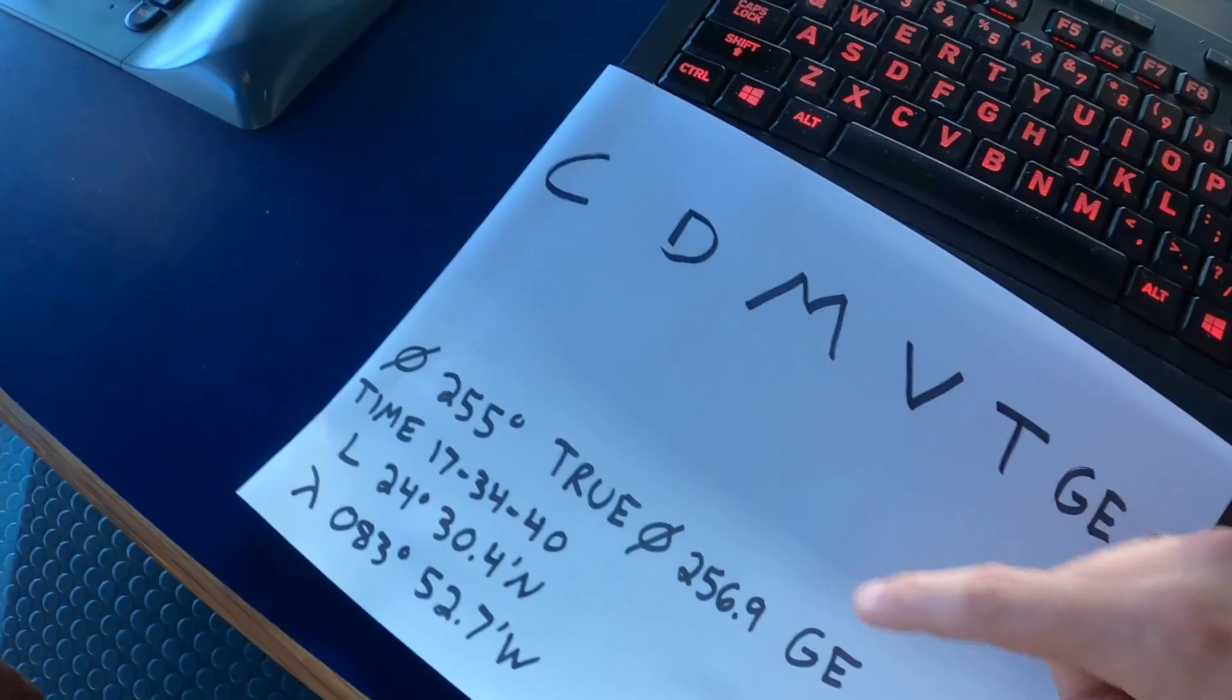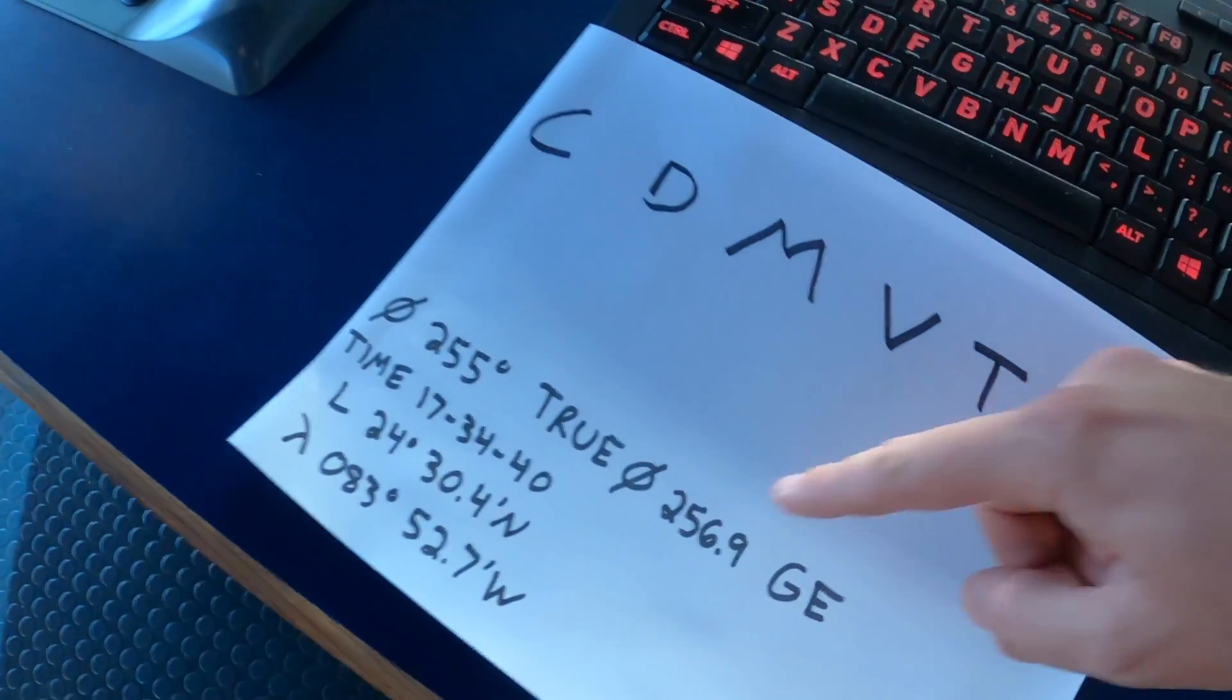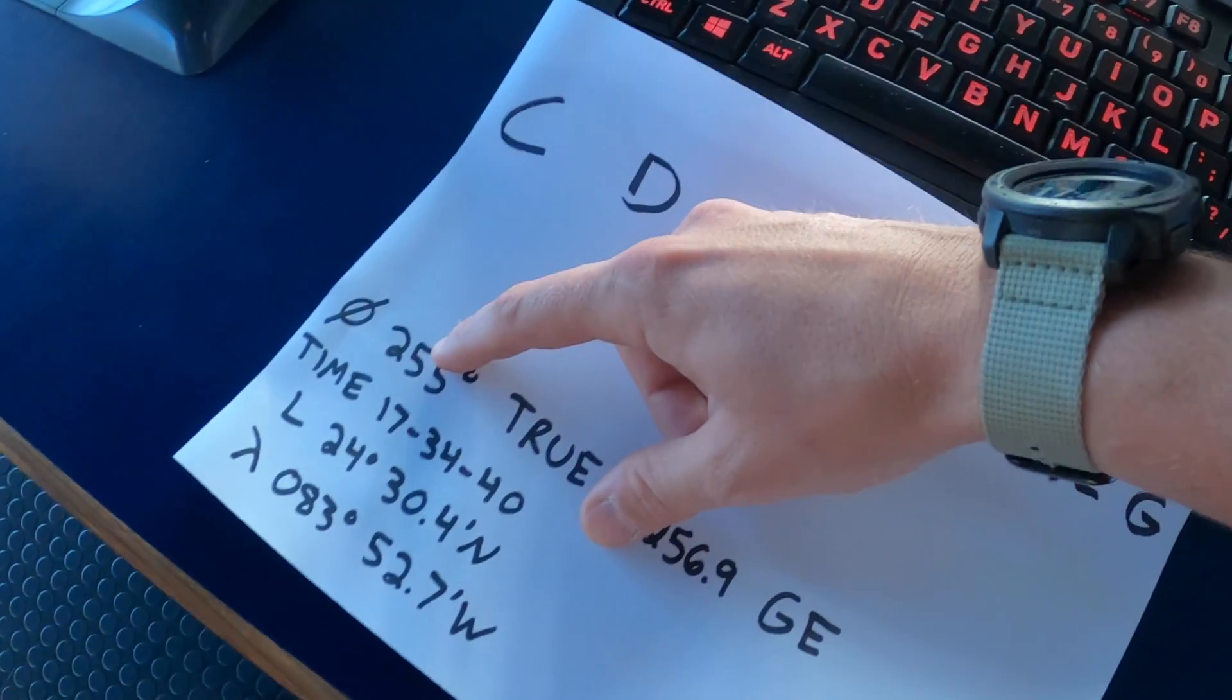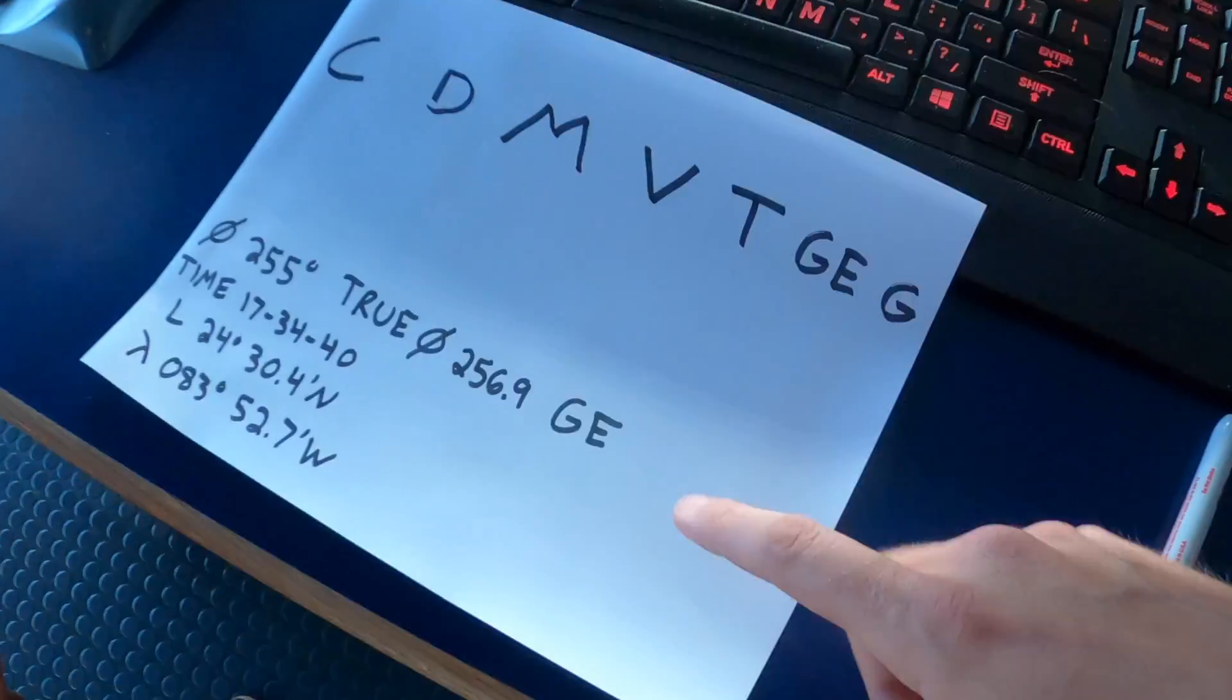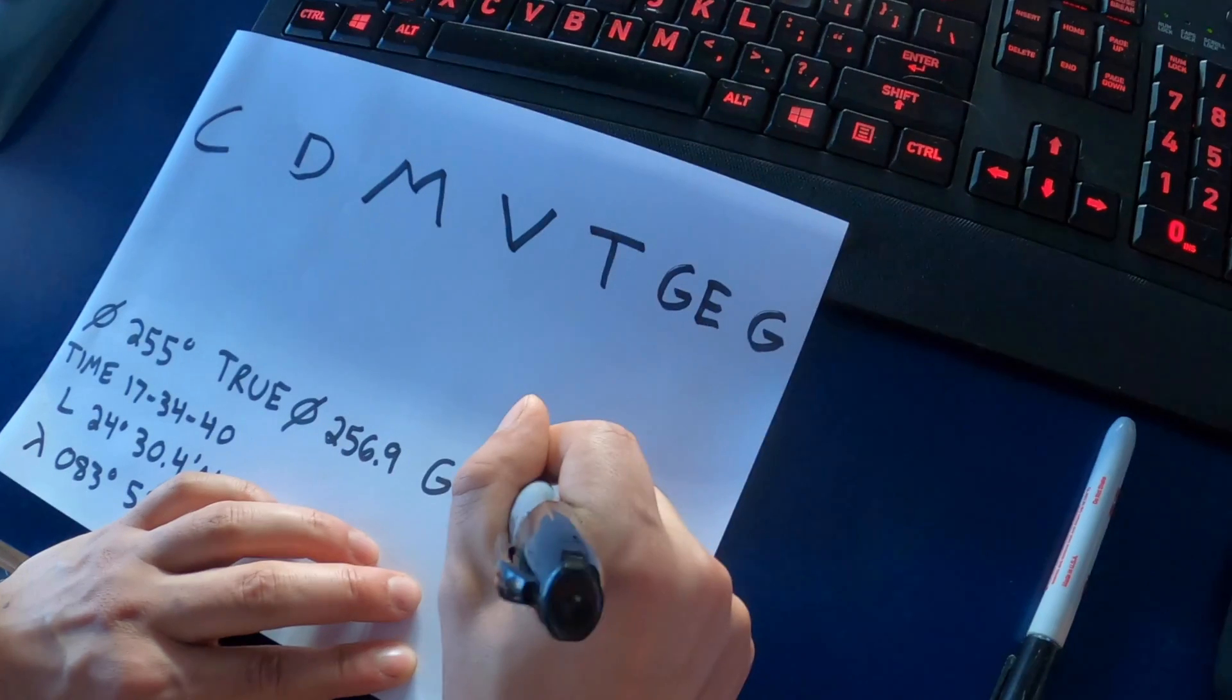So that means there's some error. The gyro error will be the difference between the true bearing and our actual azimuth, and that's equal to 1.9 degrees.